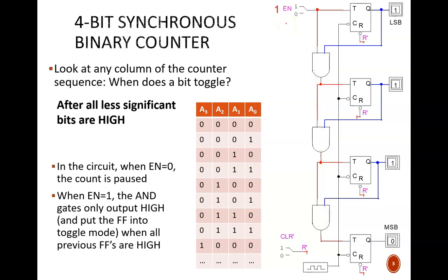But if the enable switch is high, then q0 will toggle on every clock cycle. Half of the time, q1 will be instructed to toggle. This occurs on the clock cycles after q0 is high. But after q0 is low, this AND gate outputs zero, and q1 does not toggle.